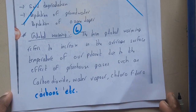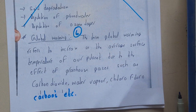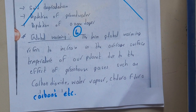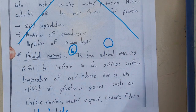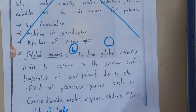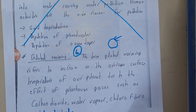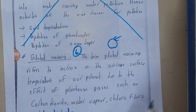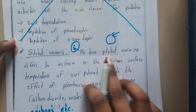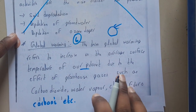Hello guys, we are back with our next lecture. In this lecture, let us go through global warming, which comes under climate changes. Global warming is basically when the temperature of the earth or any planet is increasing beyond average. The term global warming refers to an increase in the average surface temperature of our planet or any planet due to the effect of greenhouse gases.